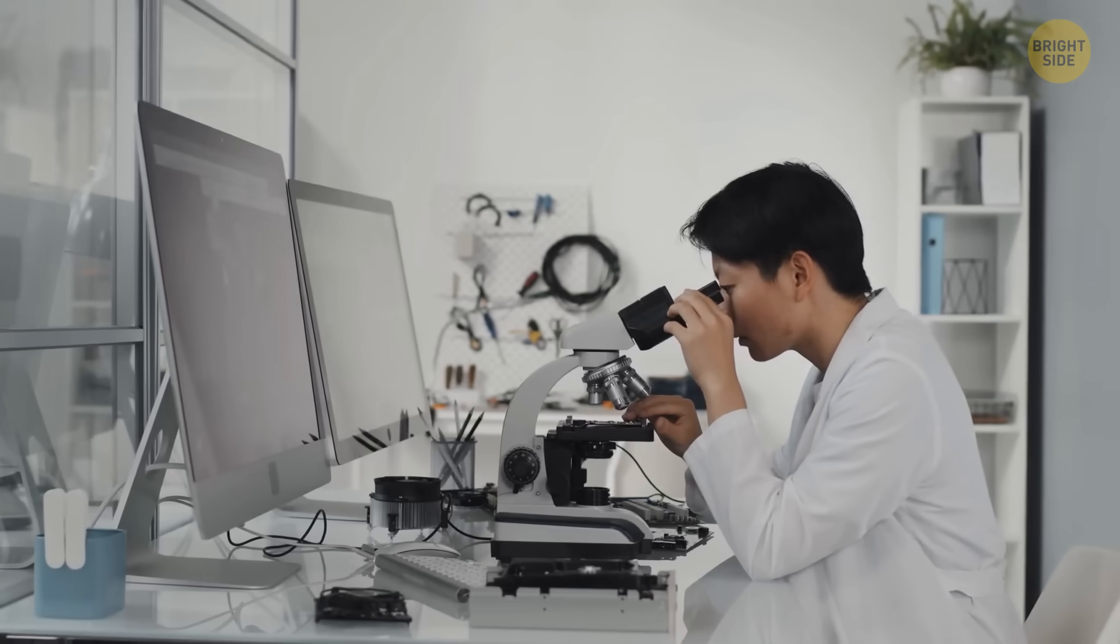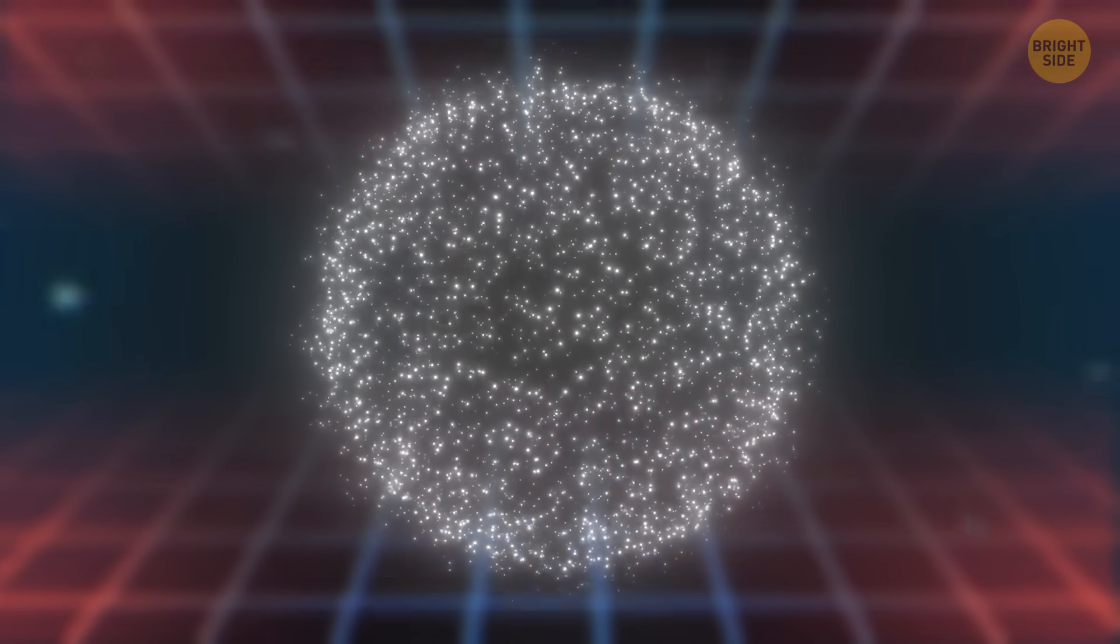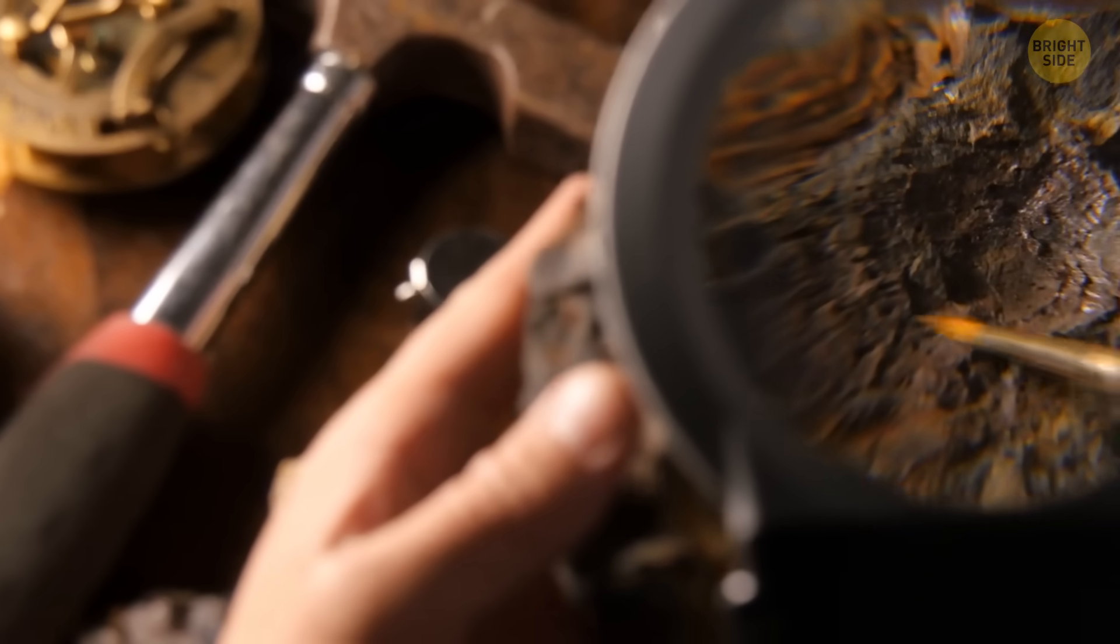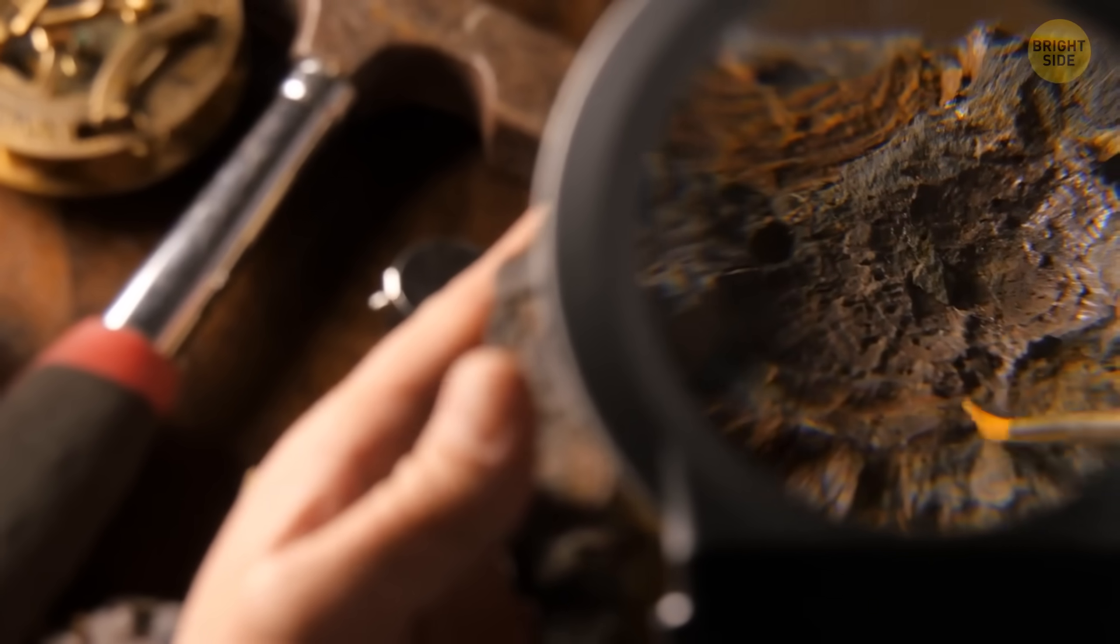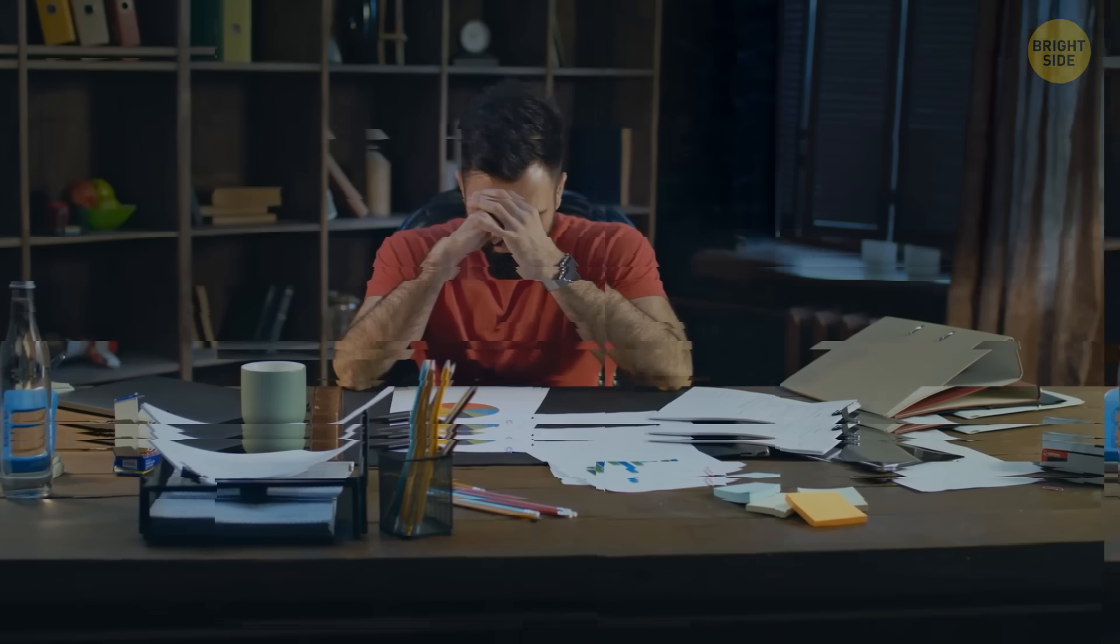And there's uranium inside it. This chemical element shows scientists the age of the rock. The fact is that uranium always decays into lead at the same rate. Scientists look at the ratio of uranium and lead and determine the age of minerals with great accuracy.